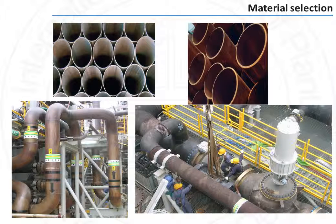A large variety of materials of construction are used in oil and gas facilities. It includes ordinary carbon steel as well as special types of carbon steel such as low temperature carbon steel. Carbon steel can also be used as galvanized carbon steel or with other types of internal coatings such as cement or rubber lined.